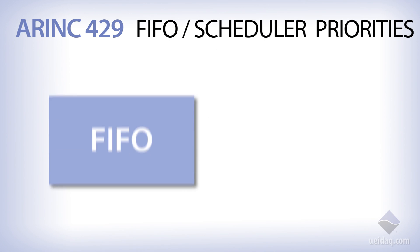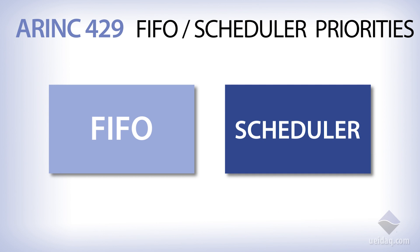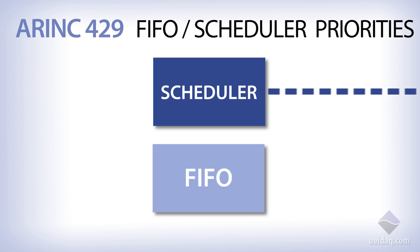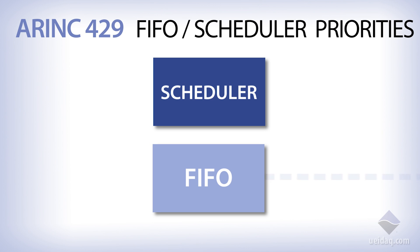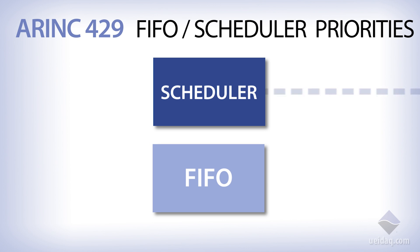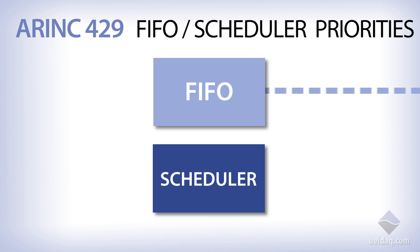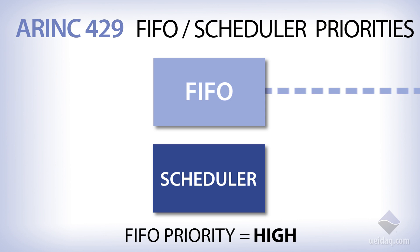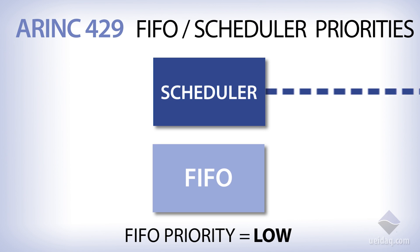Let's talk about the FIFO and the scheduler interacting with each other. By default, the FIFO runs at a lower priority than the scheduler. This means that it will only output data when the scheduler is not sending any data. If you're not using the scheduler, the FIFO is the highest priority object in the system and thus will always be sending messages. The scheduler and FIFO priorities may be interchanged simply by setting one bit in a register.